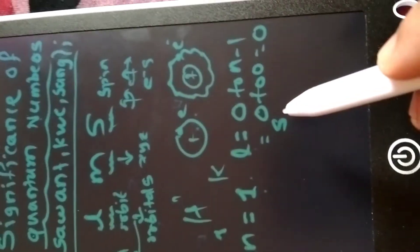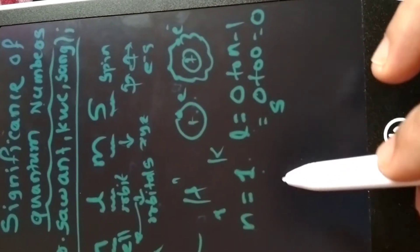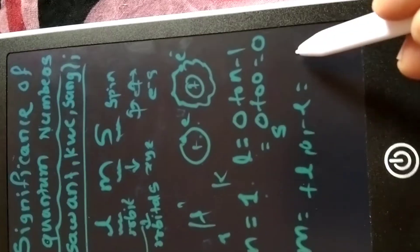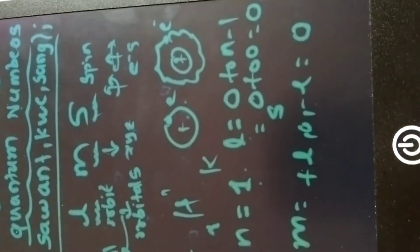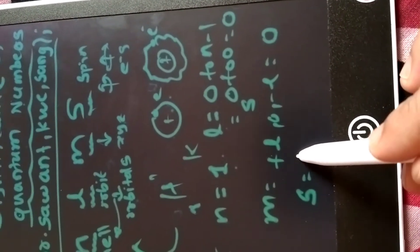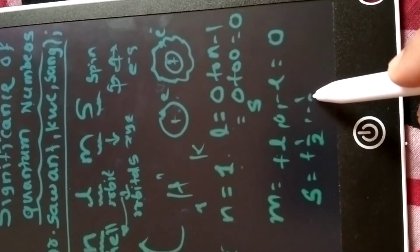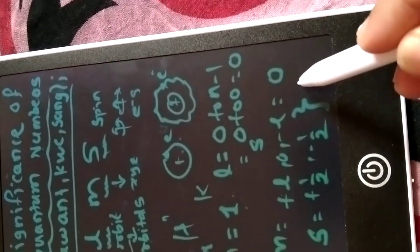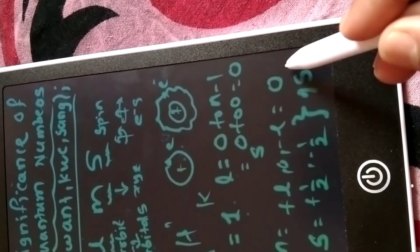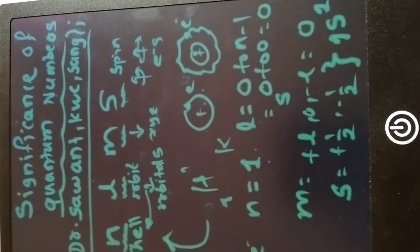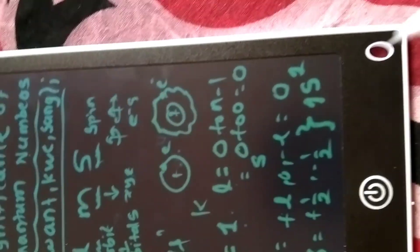For the magnetic quantum number, the values range from +l to zero to -l. Since l = 0 here, ml is also zero — meaning the one electron of hydrogen has only one orientation. The spin quantum number is either +1/2 or -1/2 for the hydrogen electron. On the basis of these quantum numbers, we can write the electronic configuration of hydrogen as 1s¹, which is derived from the quantum numbers.